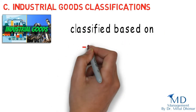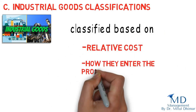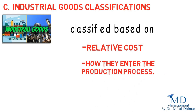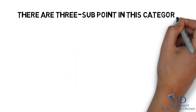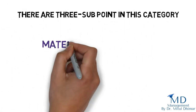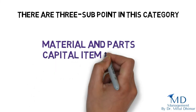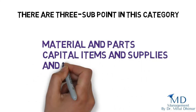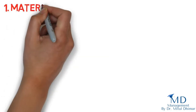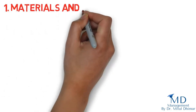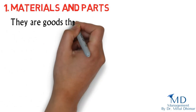Category C: Industrial Goods Classification. Industrial goods can be classified based on relative cost and how they enter the production process. There are three sub-points in this category: materials and parts, capital items, and supplies and business services. Number one: materials and parts. They are the goods that enter the manufacturer's product completely.